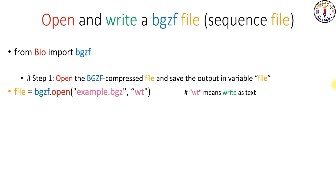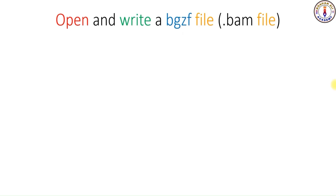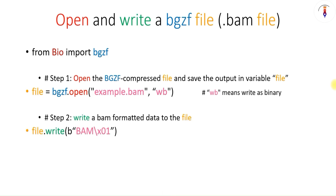wt means write as text. Then write something to the file — suppose we wrote a sequence into the file. At the end, close the file. Now if you want to write a BAM file, you follow the same steps using the same commands except for the mode. Here you type wb, which means write as binary. This will write your file in BAM syntax to the file named example.bam. Remember, BAM has a specific syntax or format — you have to type the file in exactly the same way, otherwise it will not be a valid BAM file. At the end, close the file.